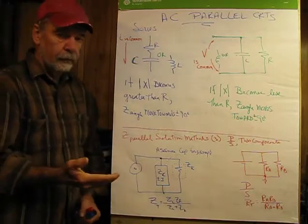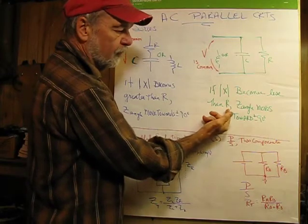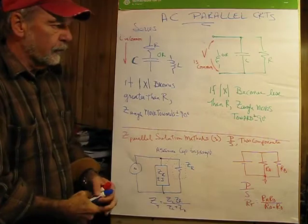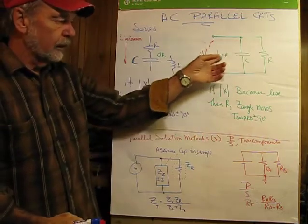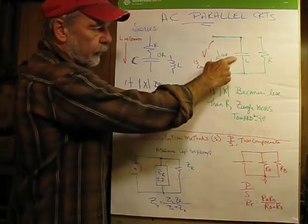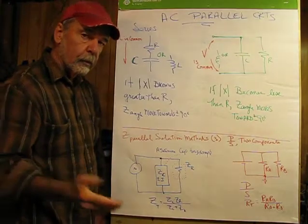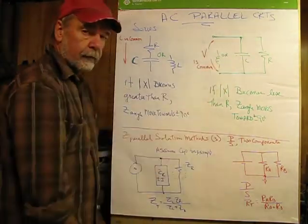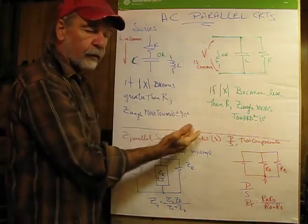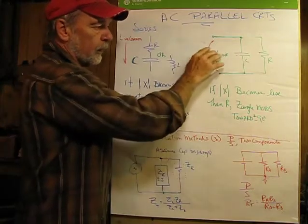Now, in a parallel circuit, it's exactly the opposite. If the absolute value of X becomes less than R, the angle moves toward 90 degrees, plus or minus 90 degrees, depending on whether we're dealing with a C or an L. The reason that is, is that the lower the impedance of the capacitor relative to the resistor, the more current is going to flow through the capacitor. Therefore, the capacitor is going to dominate as far as phase angle is concerned.